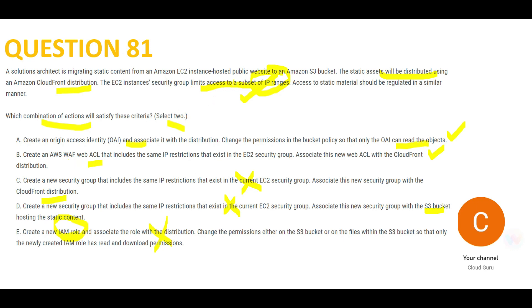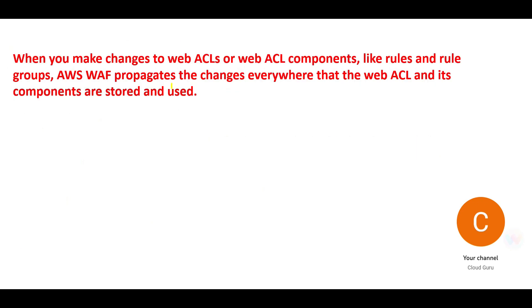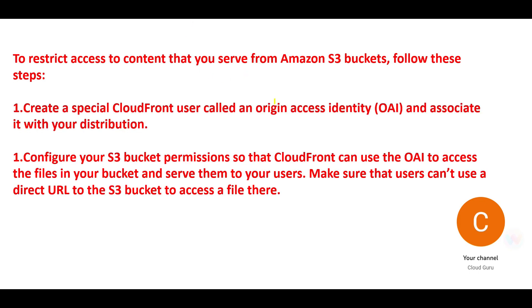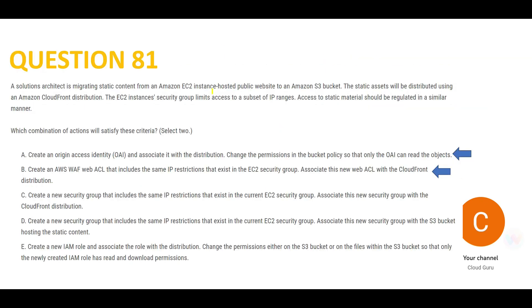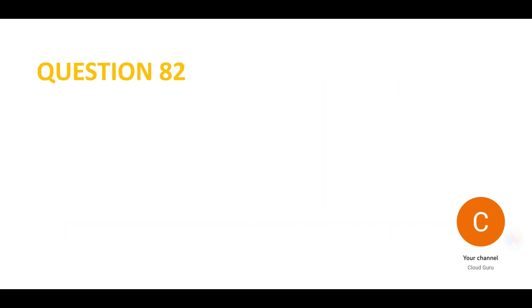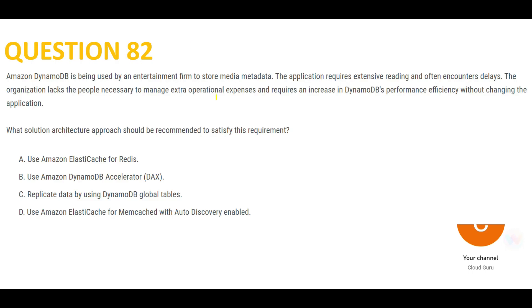Option B says create a WAF (Web Application Firewall). Whatever IP limitations you need to apply, you do it through WAF. The advantage is that when you change or update the IPs, the changes propagate everywhere automatically. That's why WAF is the right choice here. You can pause to read how OAI works. This is the final answer for Question 2.